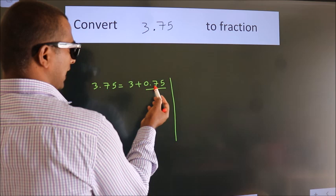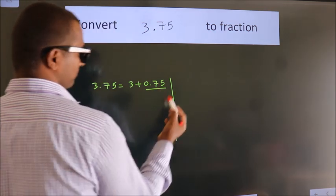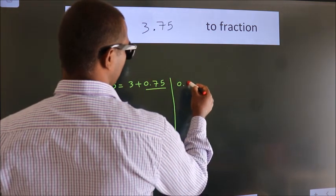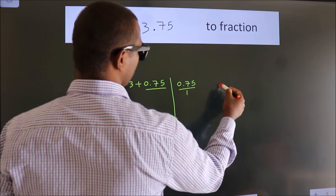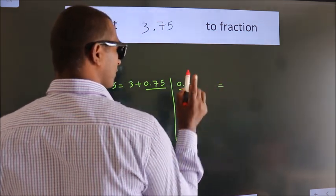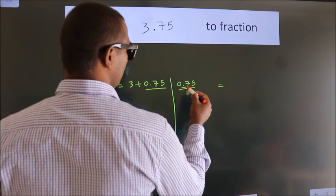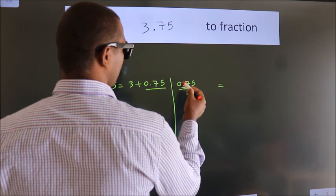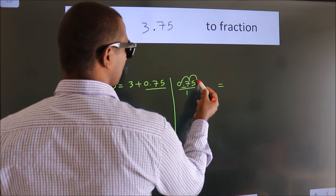Convert this to fraction over here. So 0.75. To convert this to fraction, we have to move this decimal after 1, 2 numbers.